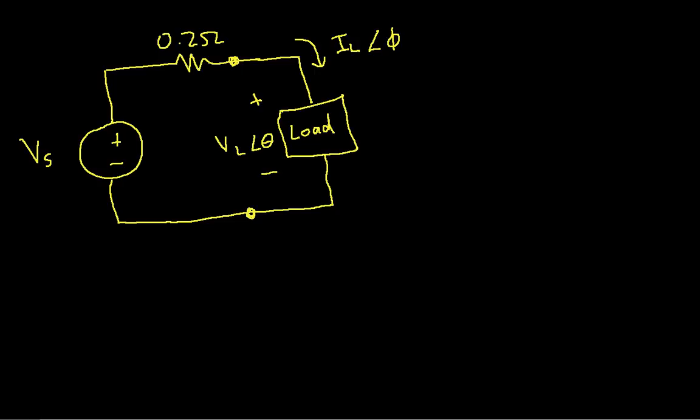we can get an understanding of why utility companies like loads with power factors that are close to one. This 0.2 ohm resistor models the resistance that you would see in the wire that a power company uses to get the energy from wherever it generates the power to wherever you use it. So what we're going to look at is the power dissipated in this 0.2 ohm resistor as a function of the power factor of this load.